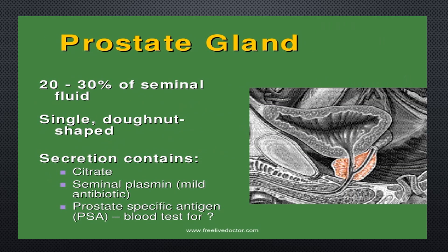The prostate gland — you may have heard about prostate cancer. This gland is very sensitive to cancer cell growth. About 20–30% of the seminal fluid is contributed by the prostate gland. It is a single, donut-shaped gland. Its secretions include citrate, which is an acid, and seminal plasmin, which is a mild antibiotic.